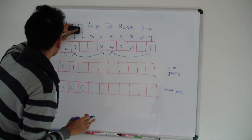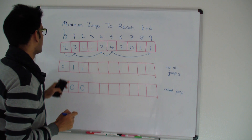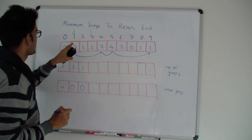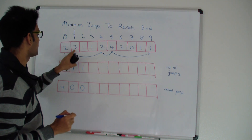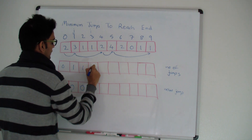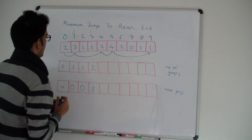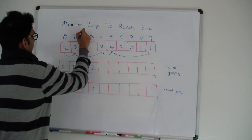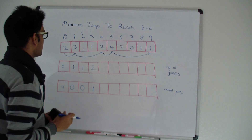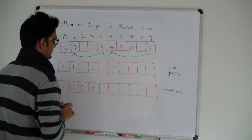Now i is three and j is zero. Can I reach three from zero? No, because from zero you can jump at most two steps. Can I reach i from one? Yes, because you can jump three steps from there. So the minimum number of steps to reach i is the minimum steps to reach j plus one, which is two. We indicate that we are reaching three from one. When j is two, can I reach three from two? Yes, but the minimum jumps would be two plus one, which is not less than two, so we don't touch it.